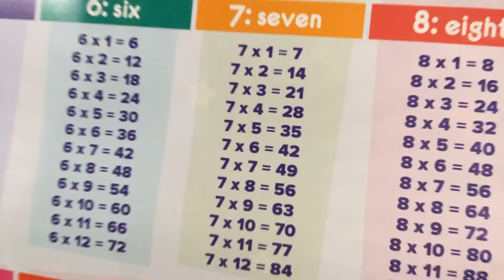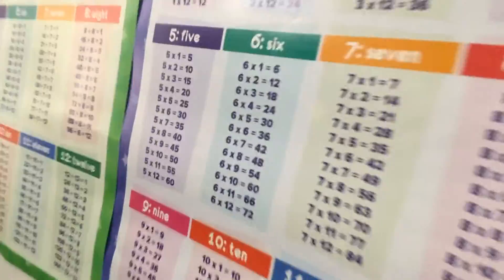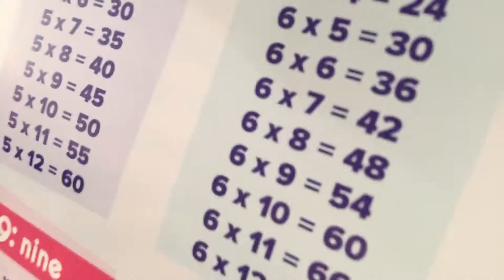We can use multiplication to check it, because Tyler, what was the multiplication sentence that you wrote? Six times five. Six times five is 30. That's because multiplication is the opposite of division, so you can check it by doing the opposite. Does that make sense to everybody?